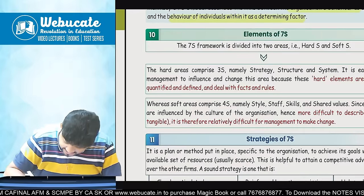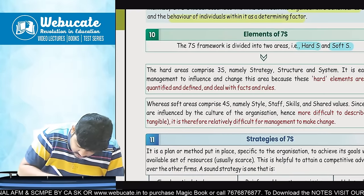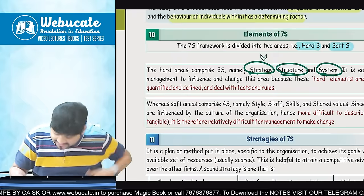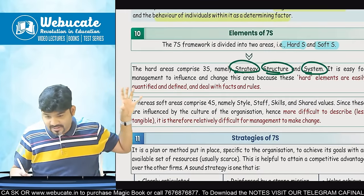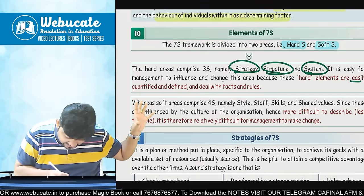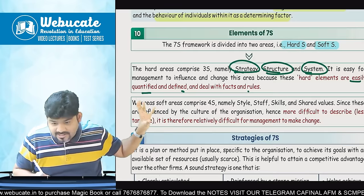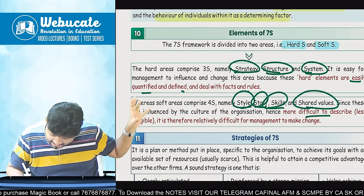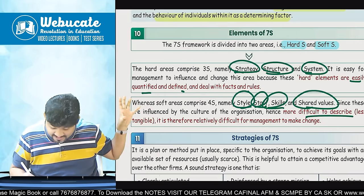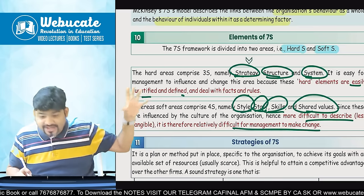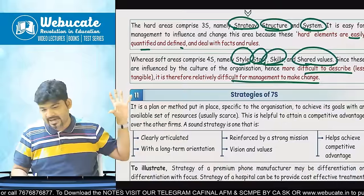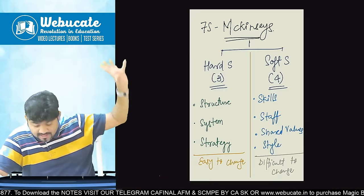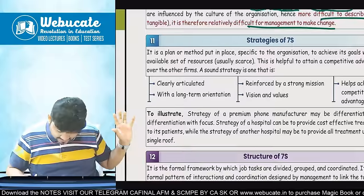The 7S framework is divided into two parts: Hard S and Soft S. The Hard S consists of strategy, structure, and system — they are quantifiable and easily defined. The remaining — style, staff, skills, and shared values — are difficult to describe and difficult for management to change. This is important for your MCQs — I hope all three hard S and four soft S are now properly memorized.